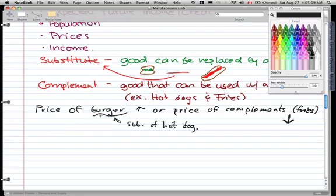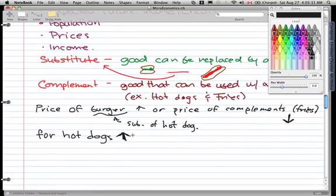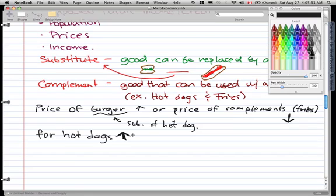Well, the price of burgers goes up, so then the burgers got more expensive. And the price of the complements went down. So that gives us all the more reason to buy more hot dogs. So for hot dogs, the demand goes up because it's more expensive to buy burgers. And for complements, the price decreased, so then there's more demand.